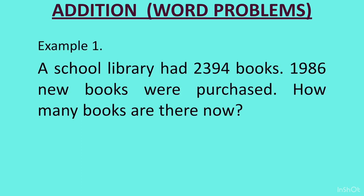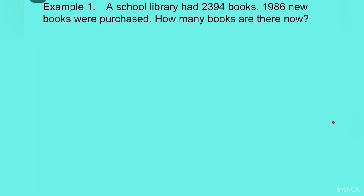Let us look at an example. A school library has 2394 books. 1986 new books were purchased. How many books are there now? To solve this question, let us read the first line again: a school library has 2394 books. So the first statement that we will write is: books in library is equal to 2394.